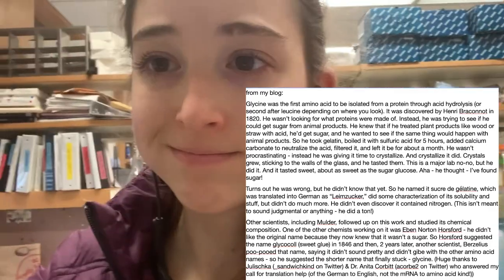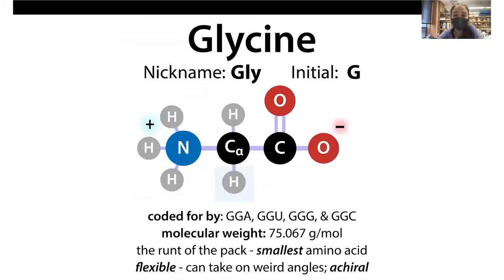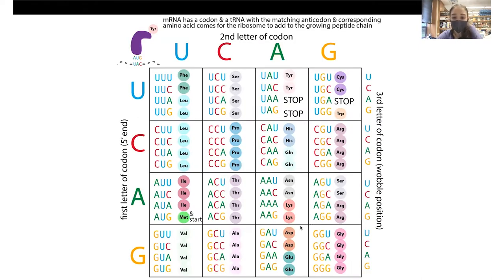So our first entry in the 20 days of amino acid advent is glycine. Glycine's three-letter code — its nickname — is GLY, and its single-letter initial is G. There are other protein amino acids that start with G, but glycine got there first, so it gets G. If you see G, think glycine, think loosey-goosey. You can also think codons that start with GG, because glycine has that corner of the codon table covered.